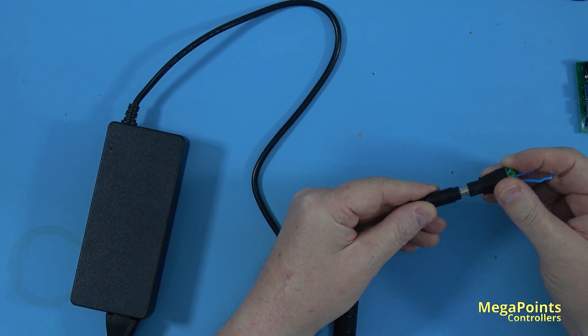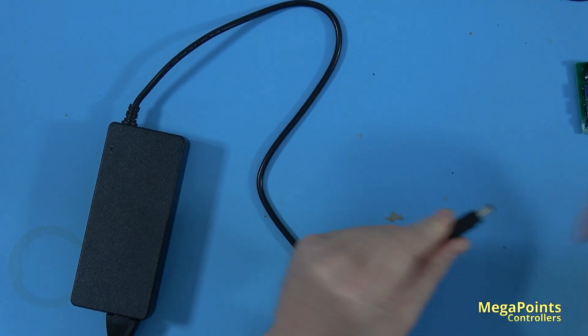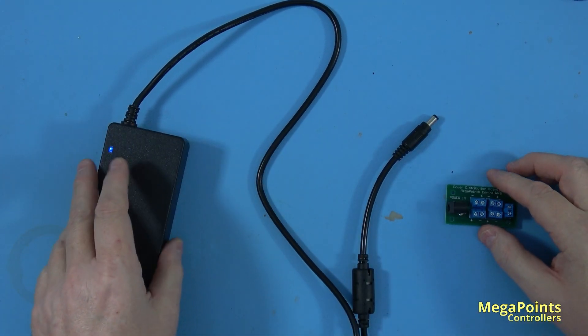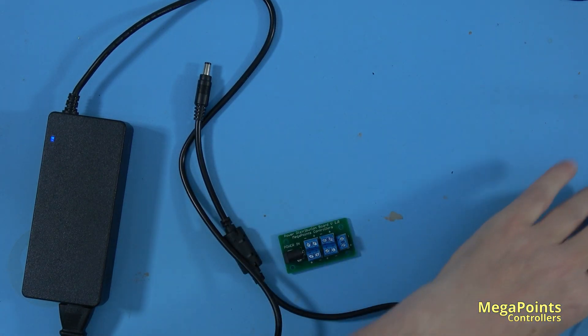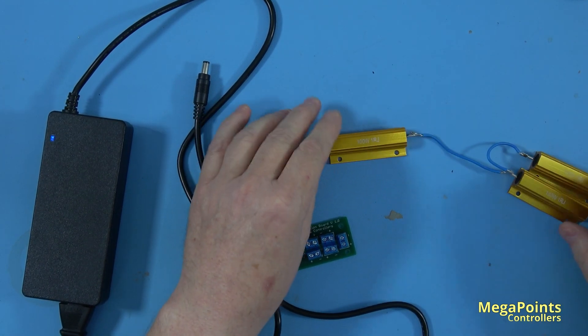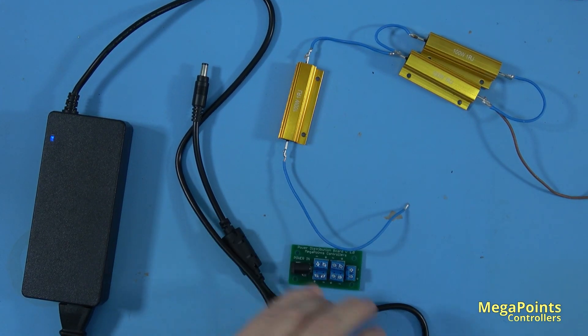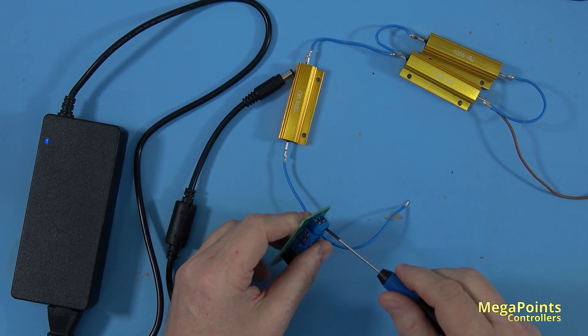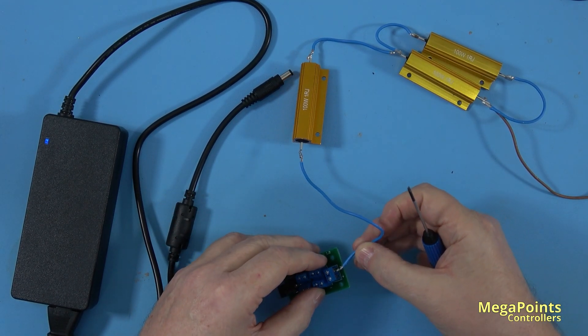The second test involves a distribution board with dummy loads. I have some 100-watt, 1-ohm resistors—two in parallel and one in series—so I'm running a 1.5-ohm load. That equates to about 8 amps, which is a full load on this supply. Let's connect it and wire it up.